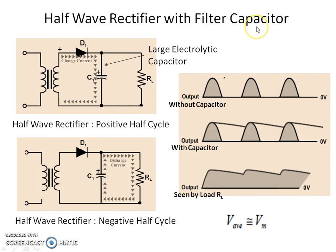A half-wave rectifier with a filter capacitor is used to reduce the ripple. The circuit uses one transformer, one diode, and a large electrolytic capacitor connected across the output. During the positive half-cycle the diode is on and the capacitor charges. During the negative half-cycle the diode is off and the capacitor discharges through the load resistor. This charging and discharging behaviour is shown in the waveform.